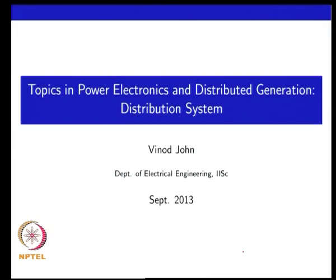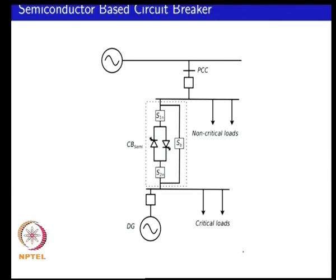Welcome to class 17 on topics in Power Electronics and Distributed Generation. In the last class we were discussing the need for faster switching when you connect a DG to the grid, and we discussed methods for semiconductor-based switches. We talked about SCR-based transfer schemes and static circuit breakers. With a semiconductor-based switch, you can have faster switching and more switching cycles compared to an electromechanical switch.